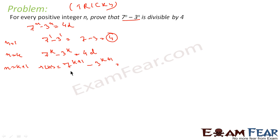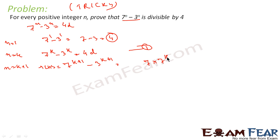We need to find the value of 7^(k+1) minus 3^(k+1). We will have to somehow convert this into the form 7^k minus 3^k. We can also write this as 7 times 7^k minus 3^(k+1).